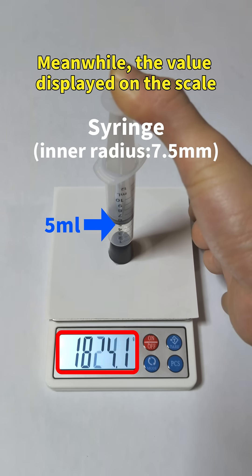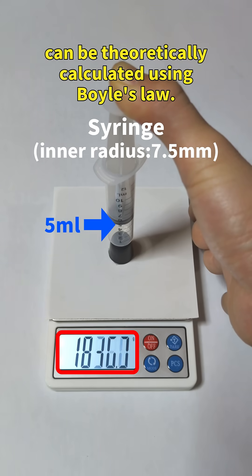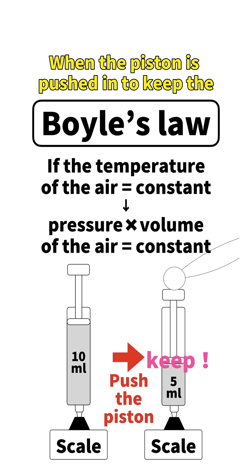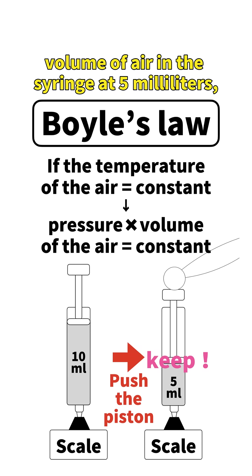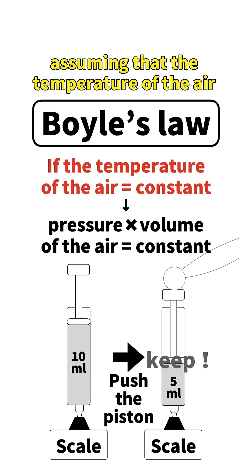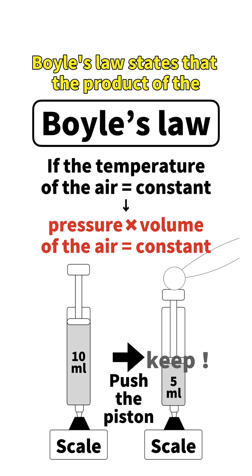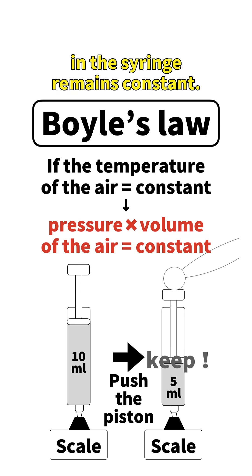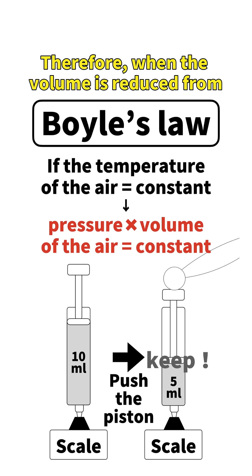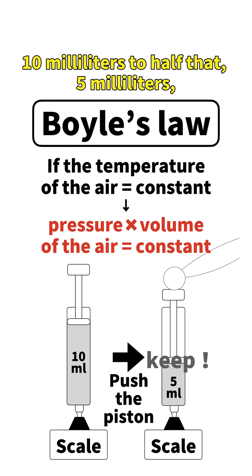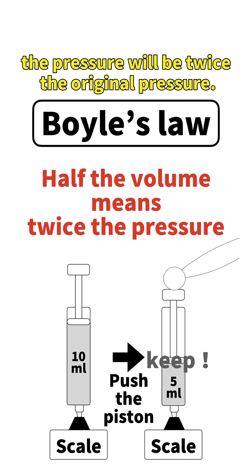The value displayed on the scale can be theoretically calculated using Boyle's law. When the piston is pushed in to keep the volume of air in the syringe at 5 milliliters, assuming that the temperature of the air in the syringe is constant, Boyle's law states that the product of the pressure and volume of the air remains constant. Therefore, when the volume is reduced from 10 milliliters to half that, 5 milliliters, the pressure will be twice the original pressure.